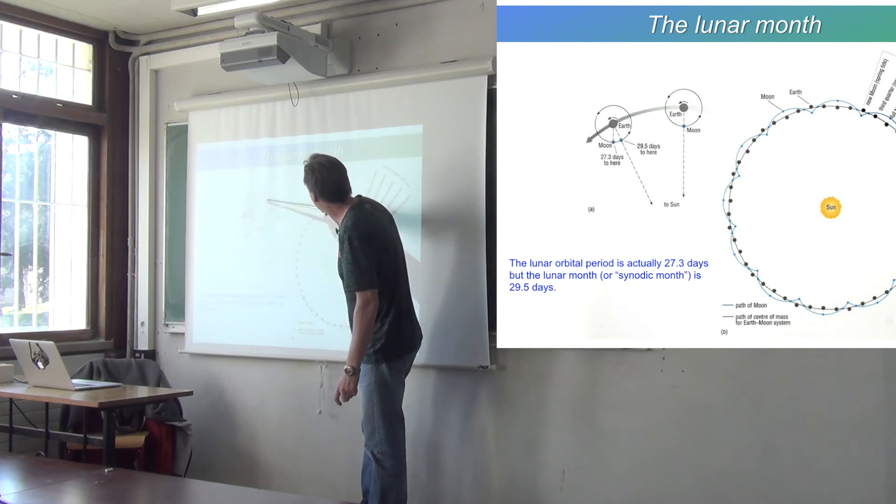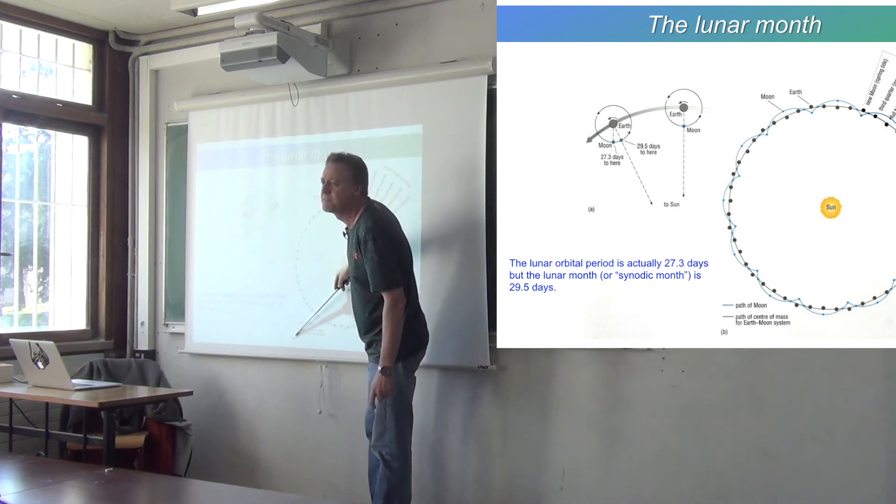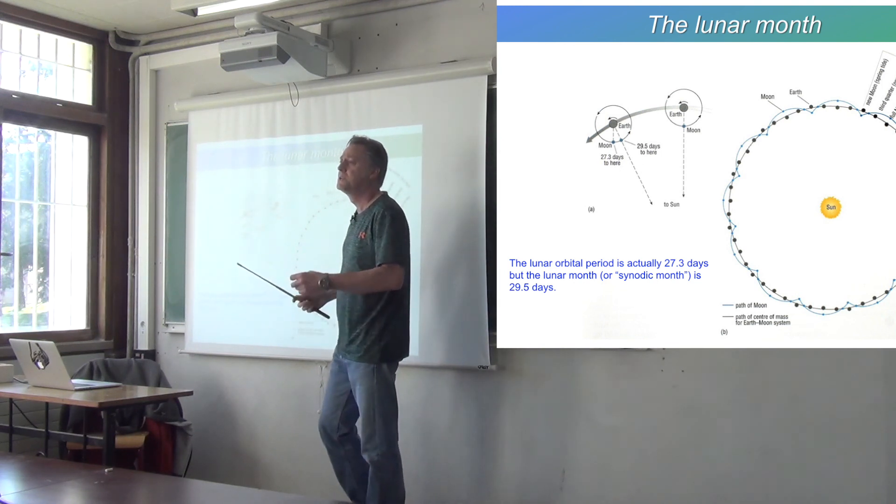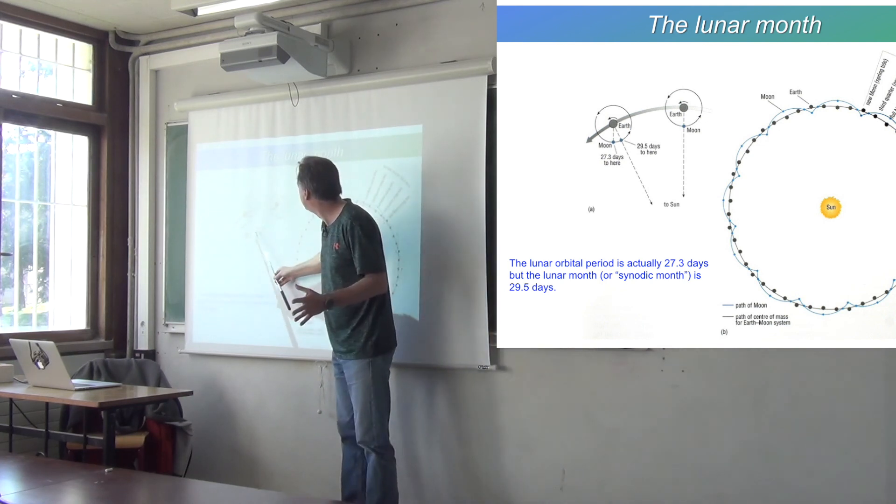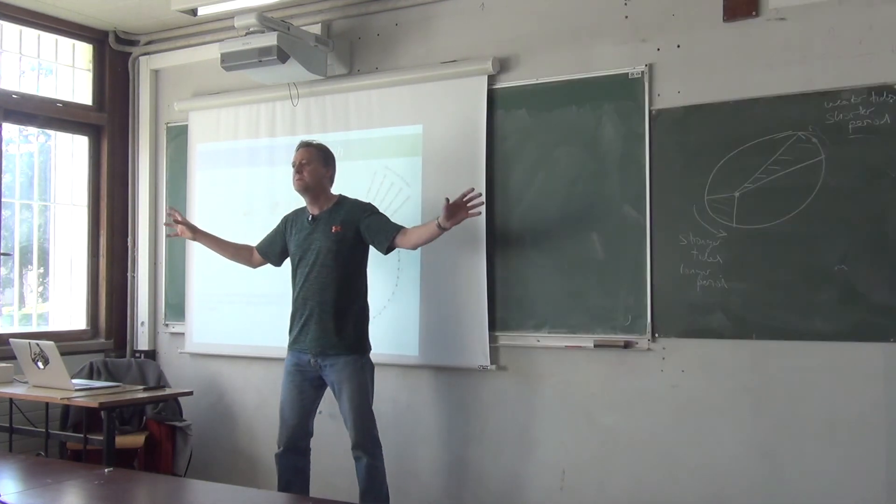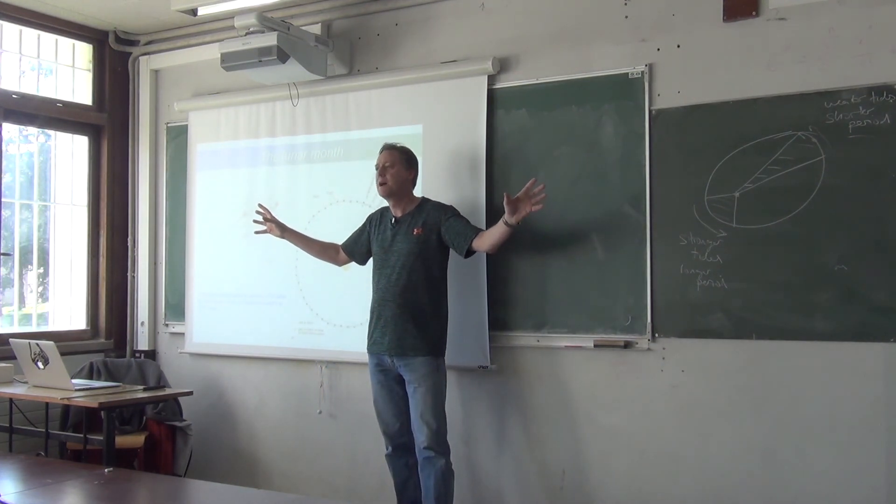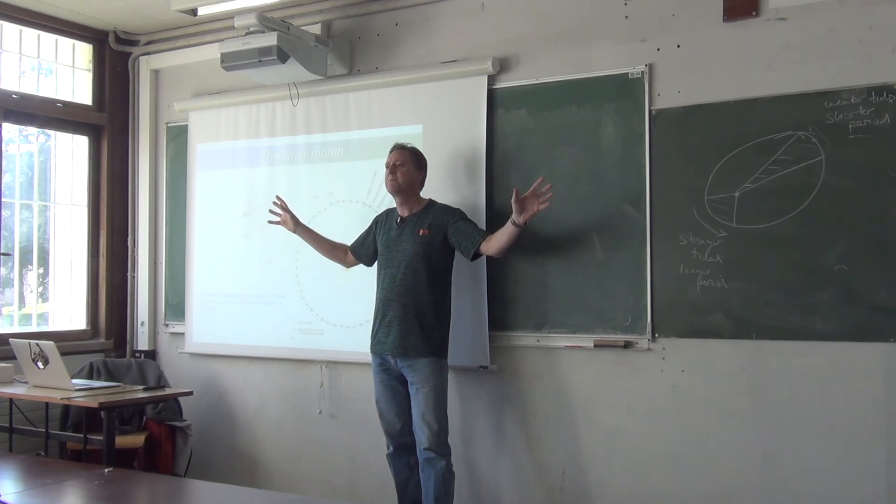Well, the Moon goes around the Earth in 27.3 days, right? But in the meantime, the Earth has moved. So relative to the Sun, the Moon has to go another couple of days to 29.5 days to be in the same phase again. So the phases of the Moon change on a period which is about 30 days, 29.5 days. So the time between a new Moon and a full Moon, the time between these maxima in tidal amplitude, is about 15 days.